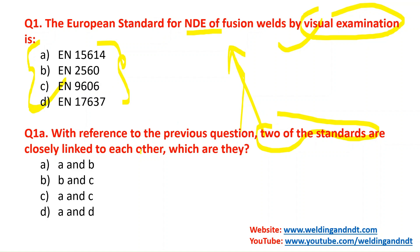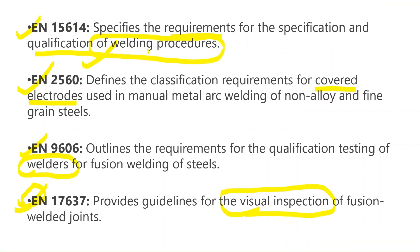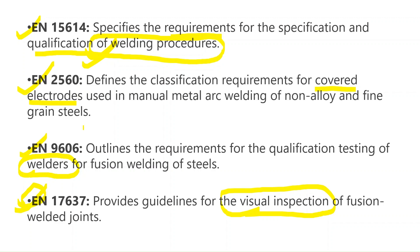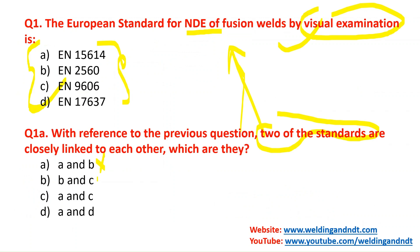Now, with reference to the previous question, two of the standards are closely linked to each other. In option A and B, we have EN15614 — qualification of welding procedures — and EN2560 — covered electrodes. These do not seem related to each other, so we discard this option. Option B and C: EN2560 is for welding electrodes and EN9606 is for qualification of welders — these are also not related.